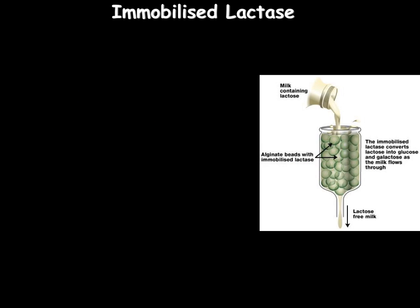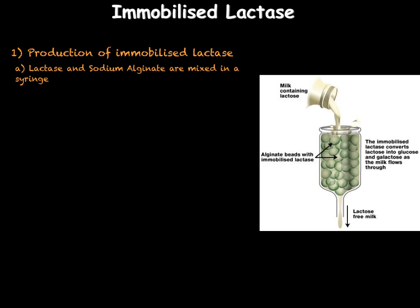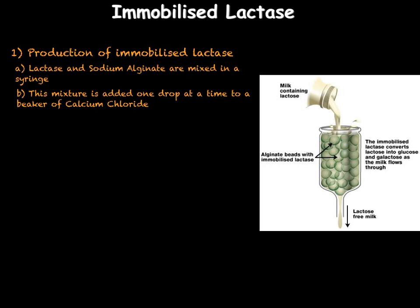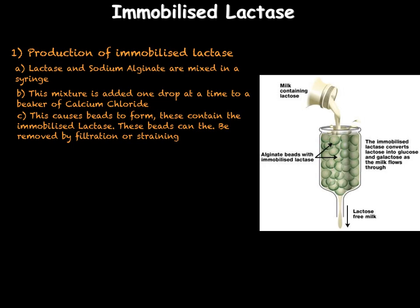For GCSE you need to be able to describe this immobilisation experiment, which is split into three sections. The first section is the production of immobilised lactase: mix the enzyme with sodium alginate, then add the mixture one drop at a time to a beaker of calcium chloride. As the droplets hit the surface of the calcium chloride they solidify into small beads with the lactase immobilised inside. Allow them to harden for a few minutes, then separate the calcium chloride solution from the beads using filtration or a tea strainer.